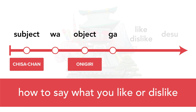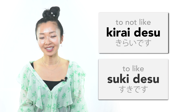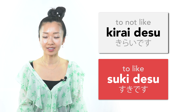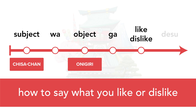The ga particle is used instead of the classic wa particle when marking an object that you either like or dislike. And finally, the main component of this phrase is stating whether or not you like or dislike the object mentioned, which brings us to an important side note. To say you like something: suki desu. To say you dislike something: kirai desu.